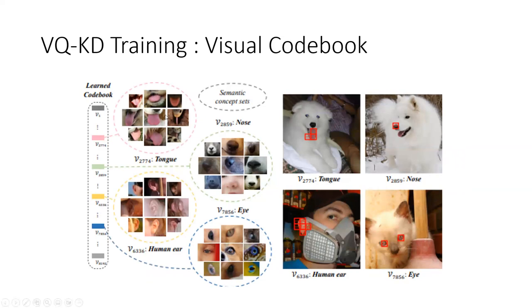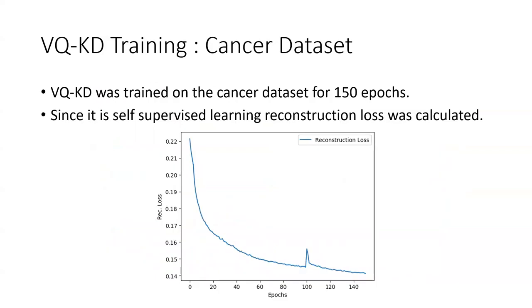This is what a visual codebook looks like. It's the nearest neighbor. All the codebooks which are closer to V2774 look like tongues, and at this point they look like noses and human ears. It's based upon the nearest neighbor on an n-dimensional space. In our case, VQ-KD training was trained on the cancer dataset for 150 epochs. Since it was a self-supervised learning reconstruction loss was calculated. The reconstruction loss as seen has after 150 epochs converged and that's when the training was stopped.